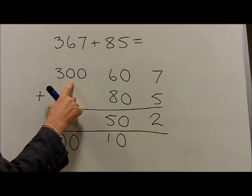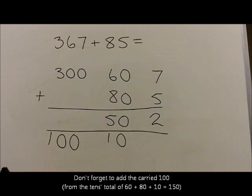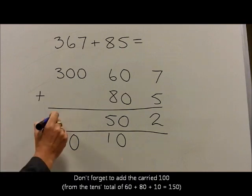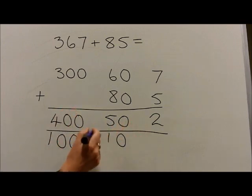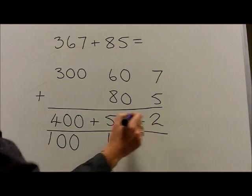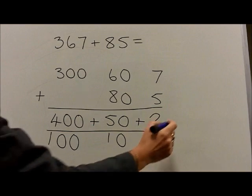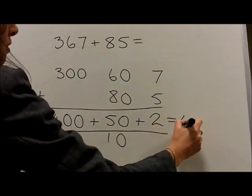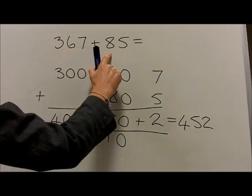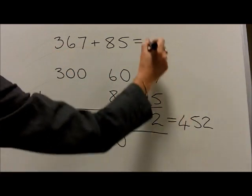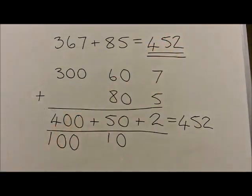We then add the 100s: we've got 3 100s with no 100s, plus 1 extra 100, that's 4 100s altogether, which is 400. We then add back the separate partitions, so we end up with 400 plus 50, which is 450, plus 2, equals 452. Therefore, 367 plus 85 equals 452, which is our final answer.